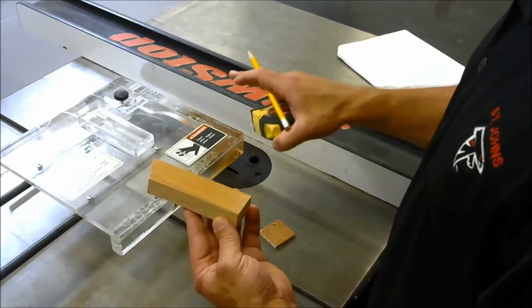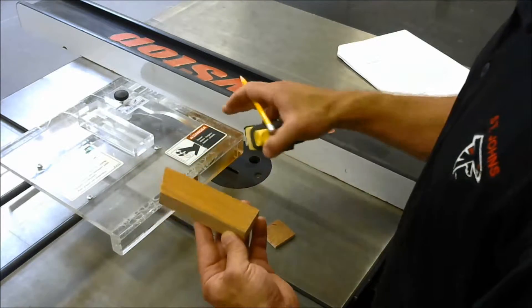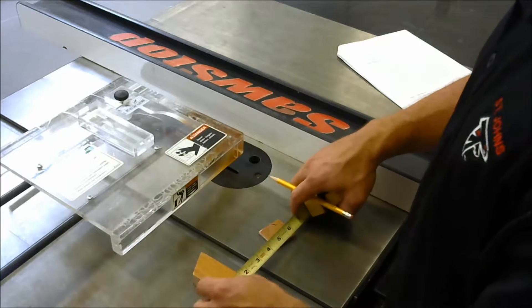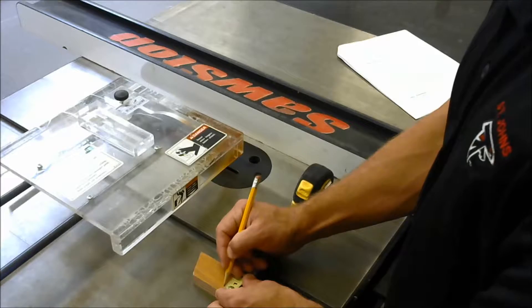We want to measure how high of a cut we're going to make. We're going to use a mark on this board to set our blade height. That mark, the direction says, is three eighths. So I'm measuring three eighths of an inch up.